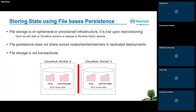Moving on to the next which is file-based persistence. File-based persistence — whenever we provision a worker or replica, space or memory gets allocated on disk which can be leveraged for storing state. We can use the file connector to access files in our worker or replica. This is basically a temporary file location like /tmp or /opt/storage which can be used to store state. Again, if you reprovision the worker or replica the state will be lost.